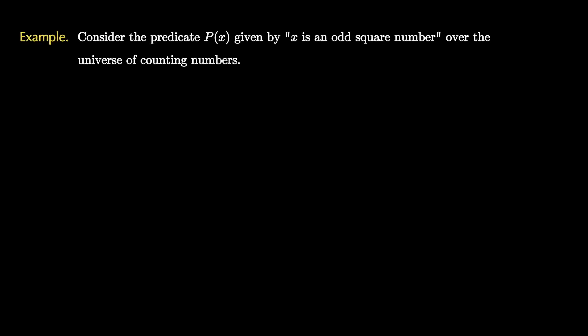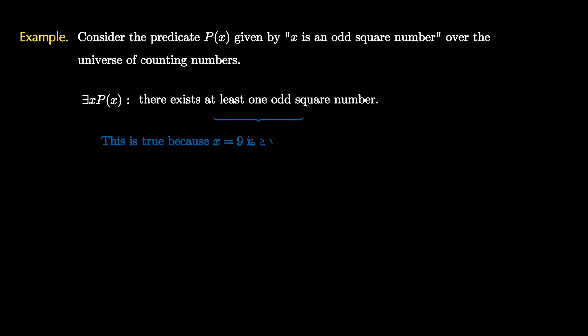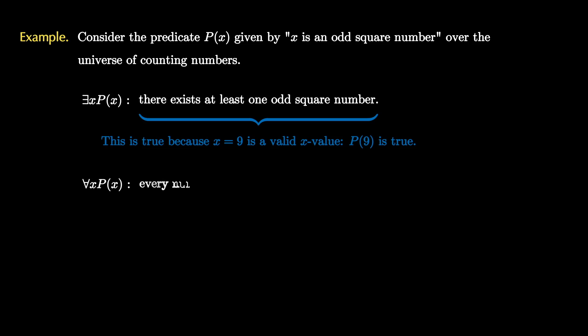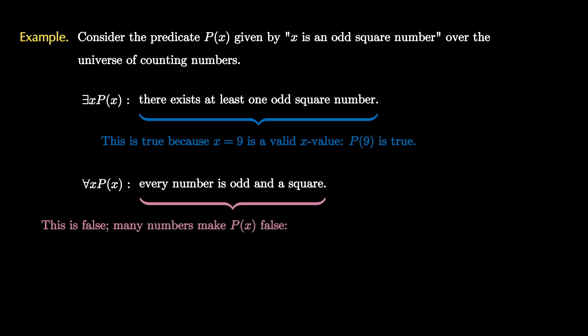Let's see a couple of examples of predicates with quantifiers creating propositions. Consider the predicate P(x) given by the sentence 'x is an odd square number' over the universe of counting numbers. If we apply the existential quantifier, we get that there exists at least one odd square number. This is a true proposition because we can use x equals 9 as our existential value — P(9) is true. If we add the universal quantifier, this translates to 'every number is odd and square,' which is false because many numbers make P(x) false.